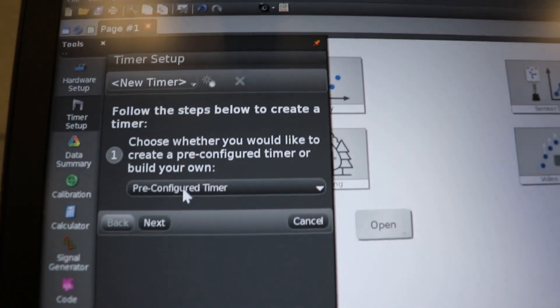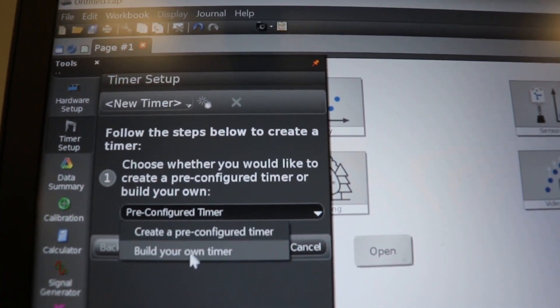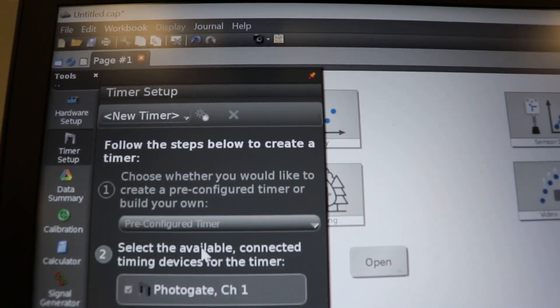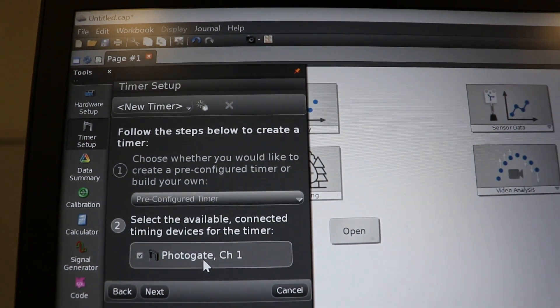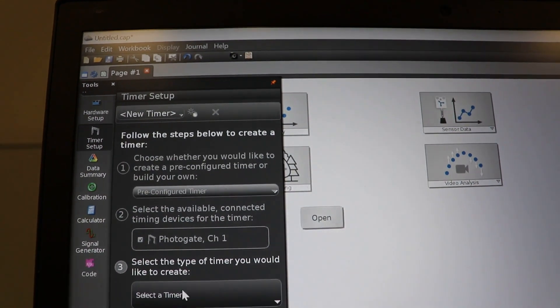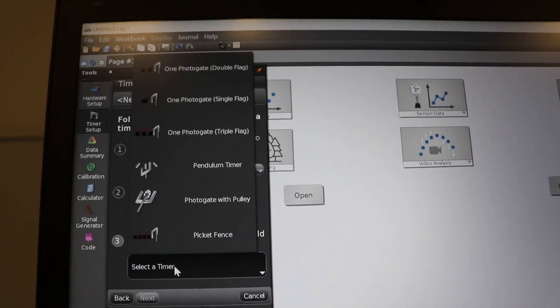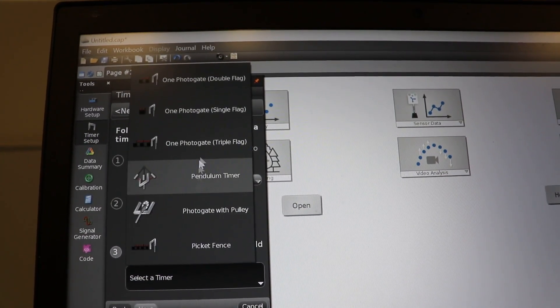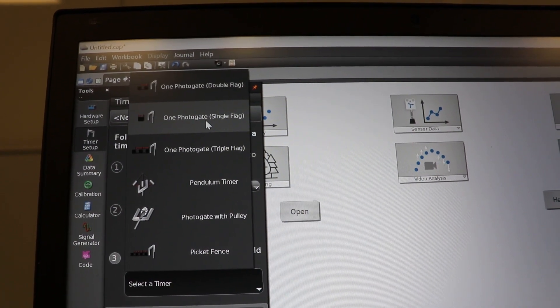You click on that, and it says pre-configured timer. And so we want just the one that's already in there, photogate channel one. And we hit next. And then we select the timer. We want a one photogate single flag.